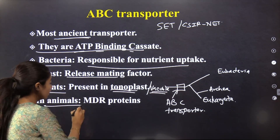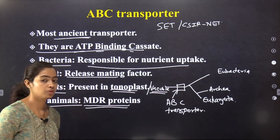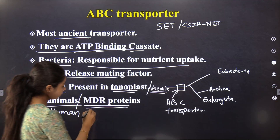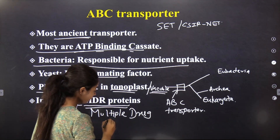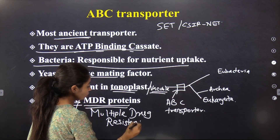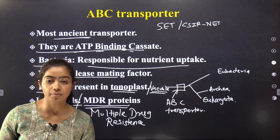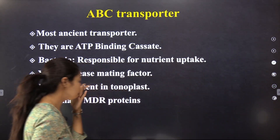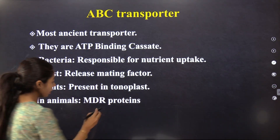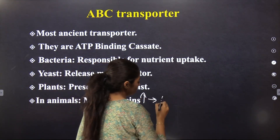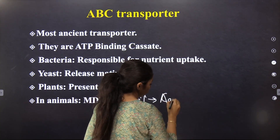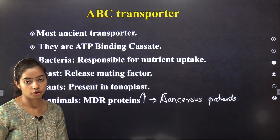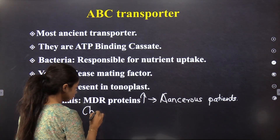In animals and humans, ABC transporters act as MDR proteins — Multiple Drug Resistance proteins. MDR proteins are abundant in cancerous patients. They are the most therapeutic products in the body, and because of them, the treatment for cancerous patients often needs to change — if one medicine is resistant to the cancerous cell, doctors have to change that medicine.